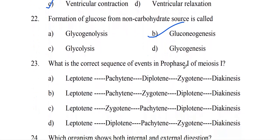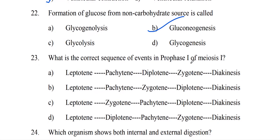What is the correct sequence of events in prophase 1 of meiosis 1? The correct sequence is Leptotene, Zygotene, Pachytene, Diplotene, and Diakinesis — option C.